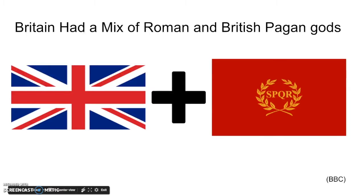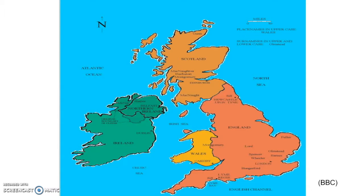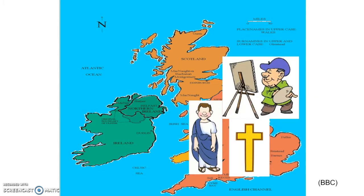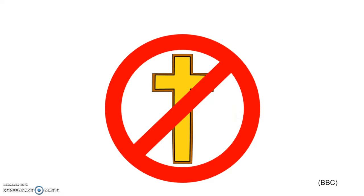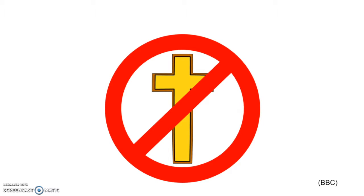In the first century AD, Britain mostly followed polytheistic practices with a mix of British and Roman pagan gods. Christianity had originally entered Britain from the East through Roman artisans and traders. These artisans and traders told stories to the people of Britain about Jesus, and they also told stories about some of their pagan gods. Unfortunately, Christians ended up being persecuted because of their faith, and followers of the religion had to practice in private.